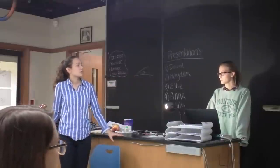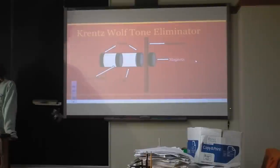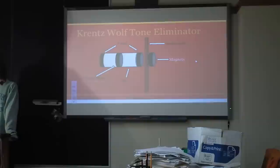So someone created this wolf tone eliminator that you put on your instrument. You put that part, that thicker part, on the string, and then that magnet on the inside moves up and down, and changes the volume of air to damp the resonation of the instrument body.